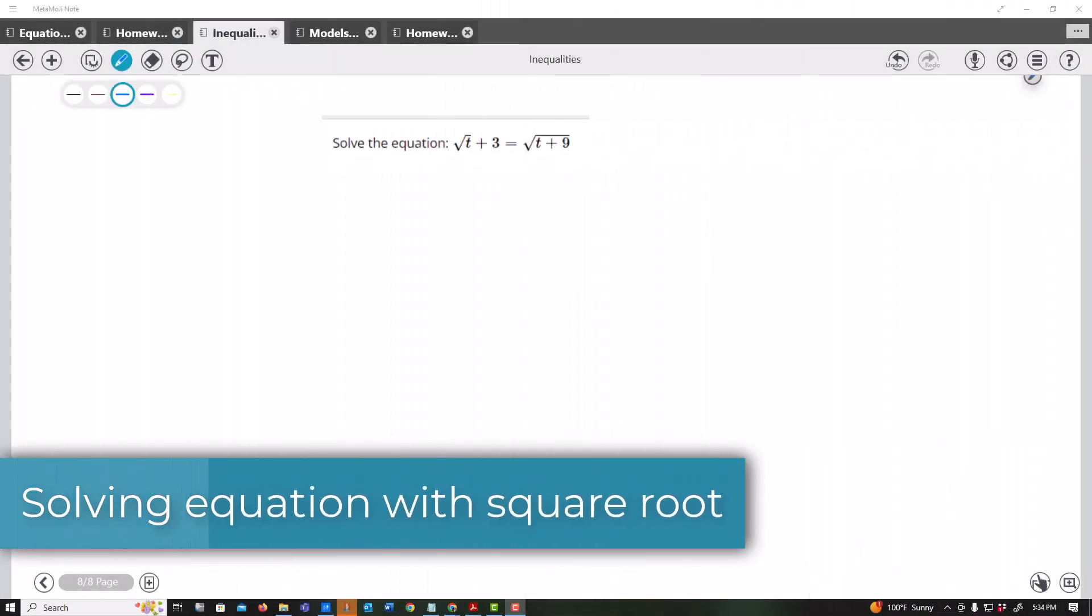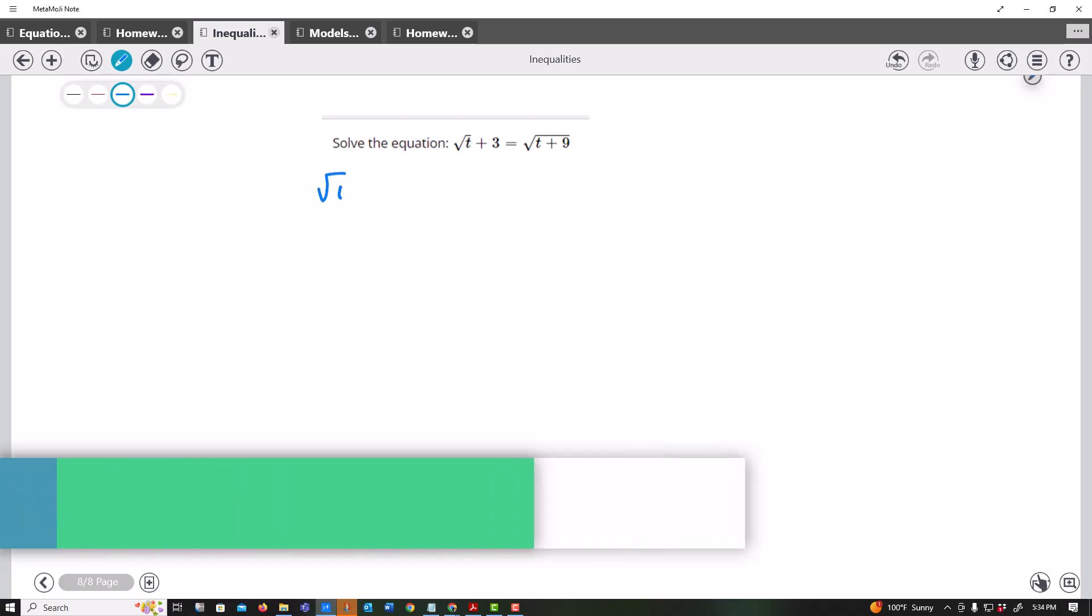Okay, remember when you see square roots, the first thing you want to do is square them because when you square a square root, it gets rid of the square root.